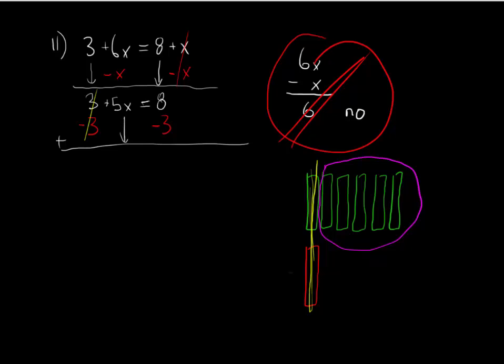We didn't do anything to the 5 times x, so that comes straight down. The equal sign always comes straight down. 8 minus 3, or 8 plus negative 3, is equal to positive 5. Here's the last step.